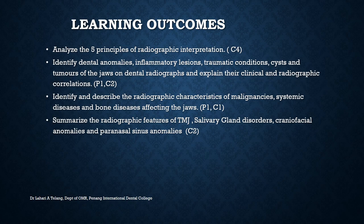The learning outcomes would be to analyze the five principles of radiographic interpretation; identify dental anomalies, inflammatory lesions, traumatic conditions, cysts and tumors of the jaws on dental radiographs and explain their clinical and radiographic correlations; identify and describe the radiographic characteristics of malignancies, systemic diseases and bone diseases affecting the jaws; and summarize the radiographic features of TMJ, salivary gland disorders, craniofacial anomalies, paranasal sinus anomalies — which sums up pretty much half of the radiology interpretation of textbook content.